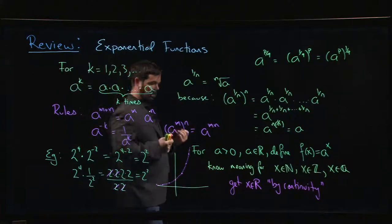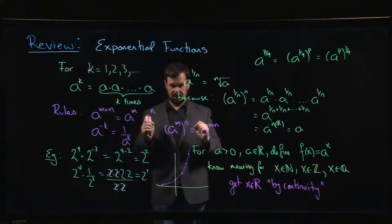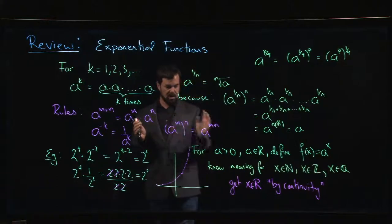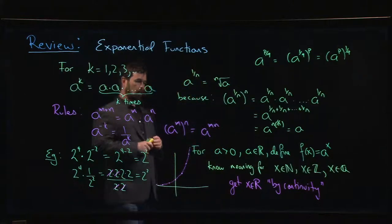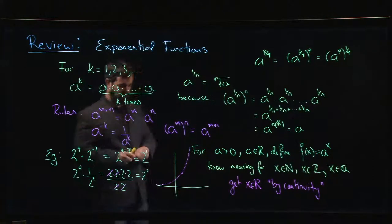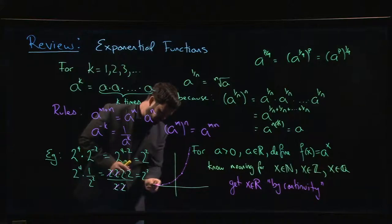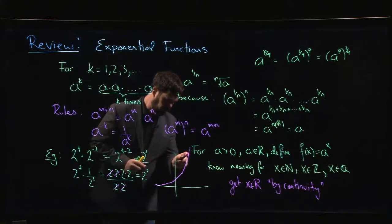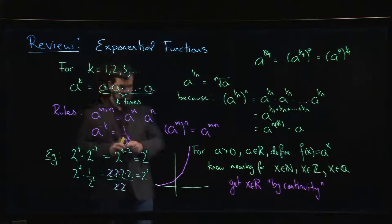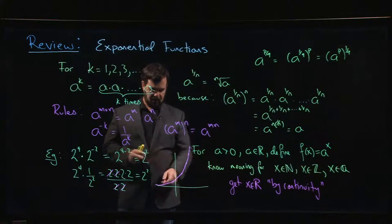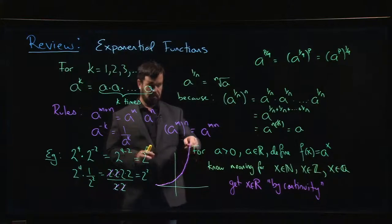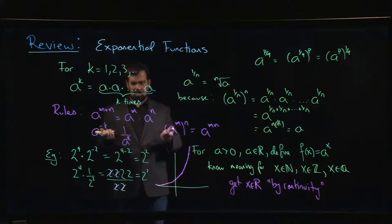We know the rationals aren't everything — there are irrationals, and in some sense there are more irrational numbers than rational ones. But the way you define the exponential function for a real variable is by connecting the dots: you fill in the gaps, and continuity means you fill them in so you get a continuous, unbroken line. You're not going to suddenly put a point somewhere off the curve — you follow the curve. That's one way of thinking about how you define an exponential function of a real variable.